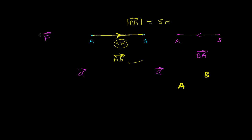So the magnitude of a force — if you want to write it — give two lines around it, the modulus value. Sometimes we call it the absolute value. Let's say this is 2 Newtons. So this is the representation of the magnitude of a vector.